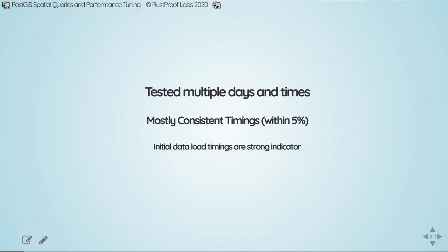Testing was done over a variety of days and times, and most timings are within about 5% of a baseline. Friday late afternoon in Mountain Time is not a good time to test DigitalOcean droplets in the New York City data center — I've seen 30 to 40% slower speeds at that time due to load. So be aware that if you're running in the cloud, results can vary based on your cloud provider's overall load.